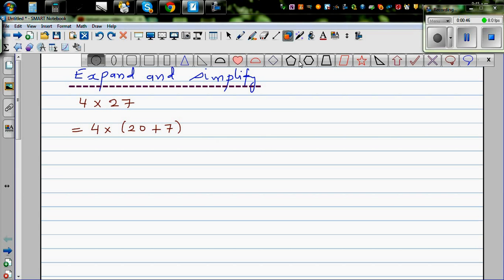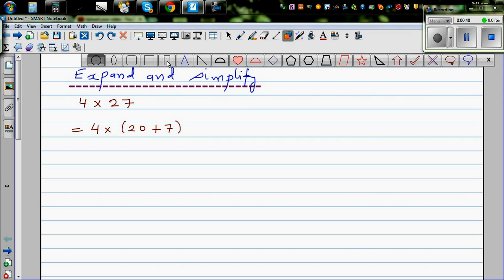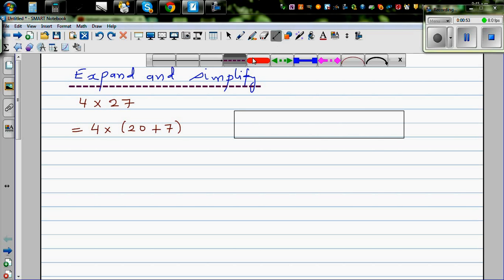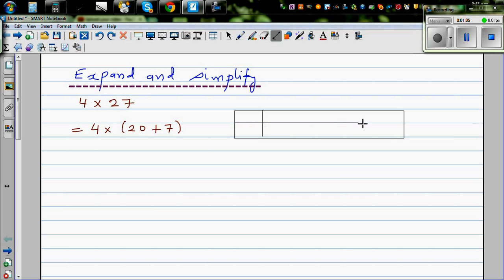You can also put this in a grid form if you want to understand grid multiplication. Let me draw a line here. I want to explain expanding using grid multiplication form. This is 4 times, and you've got 20 and 7 here.